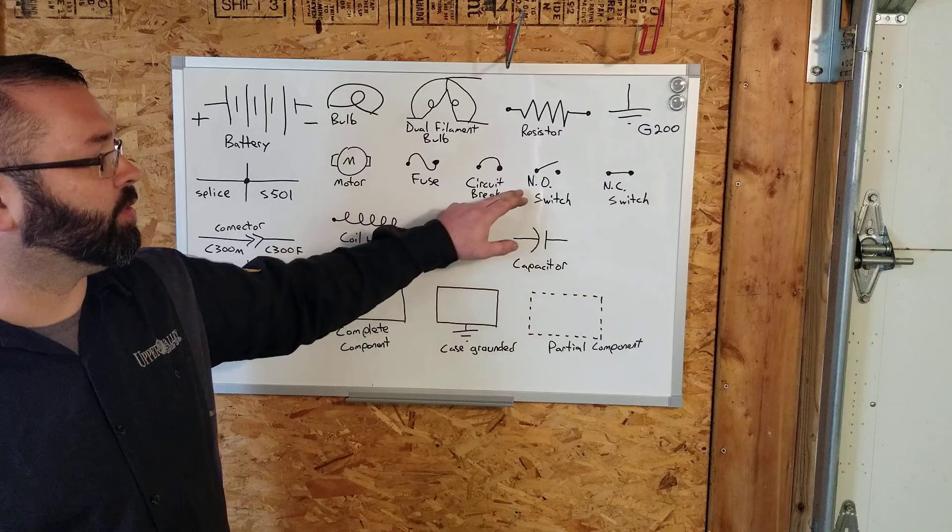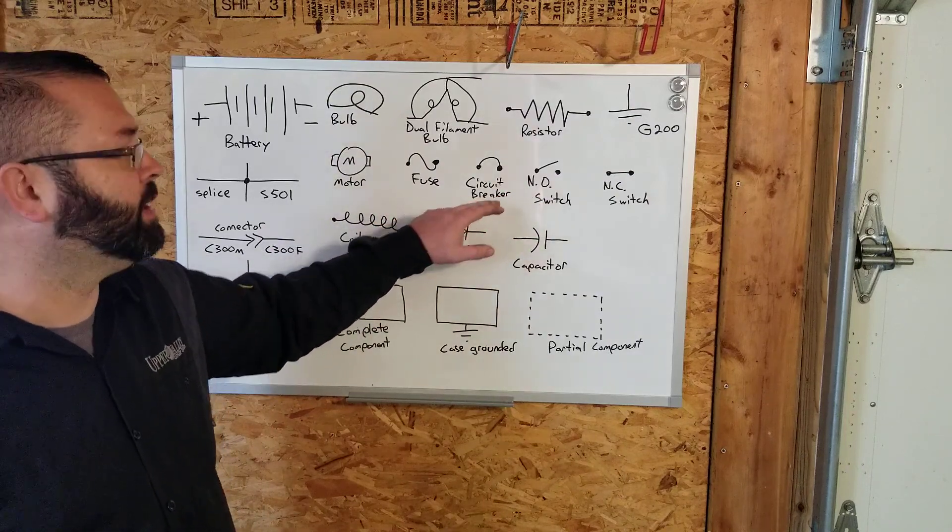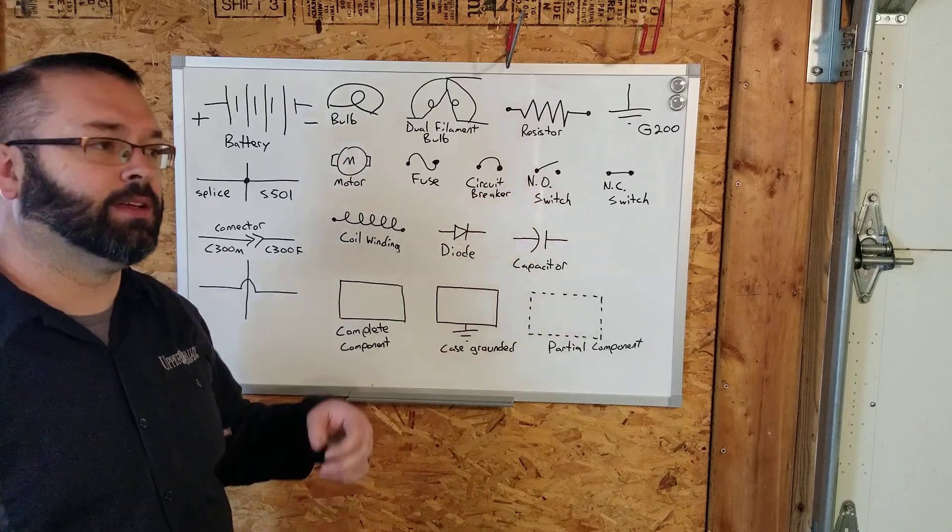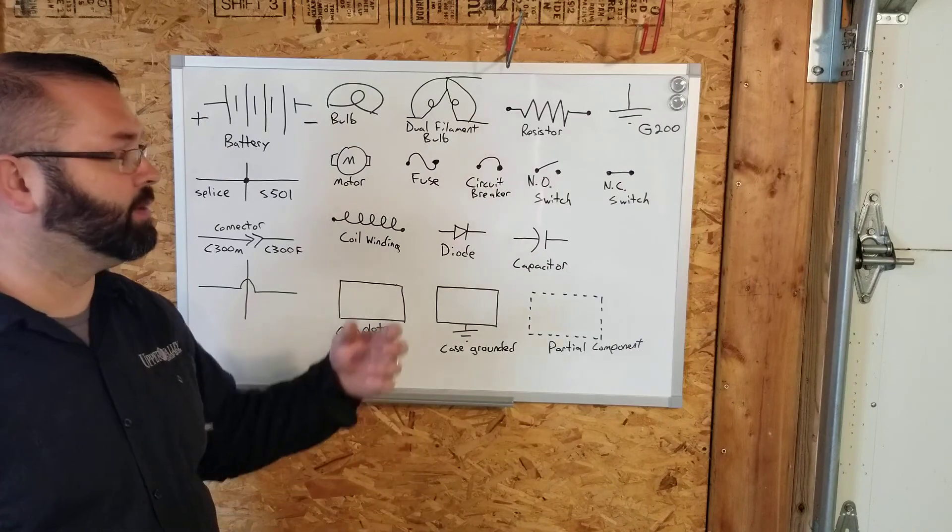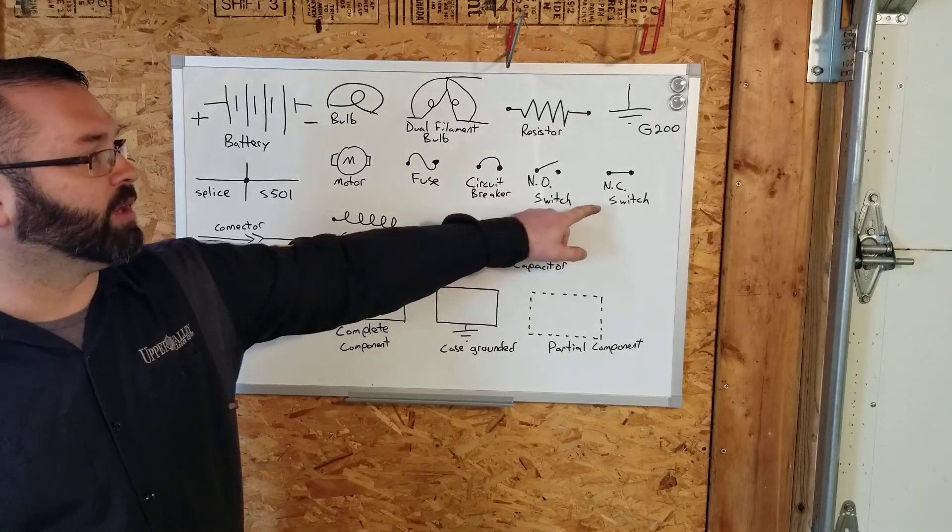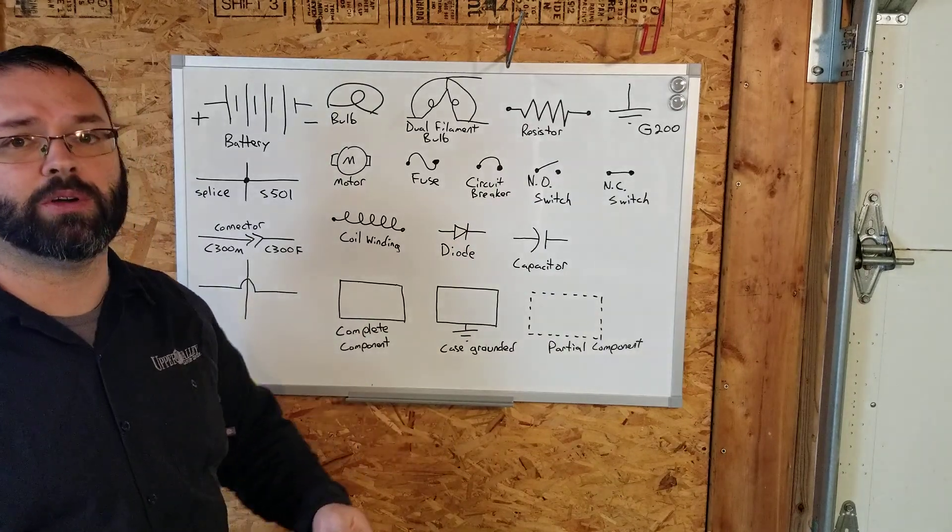Switches. This is a normally open switch, so if you see NO, it doesn't mean no switch. It's a normally open switch, meaning 100% of the time other than when you hit the switch, that switch is open. Normally closed means that switch is in a resting position of closed. When you hit the switch, it would go open.